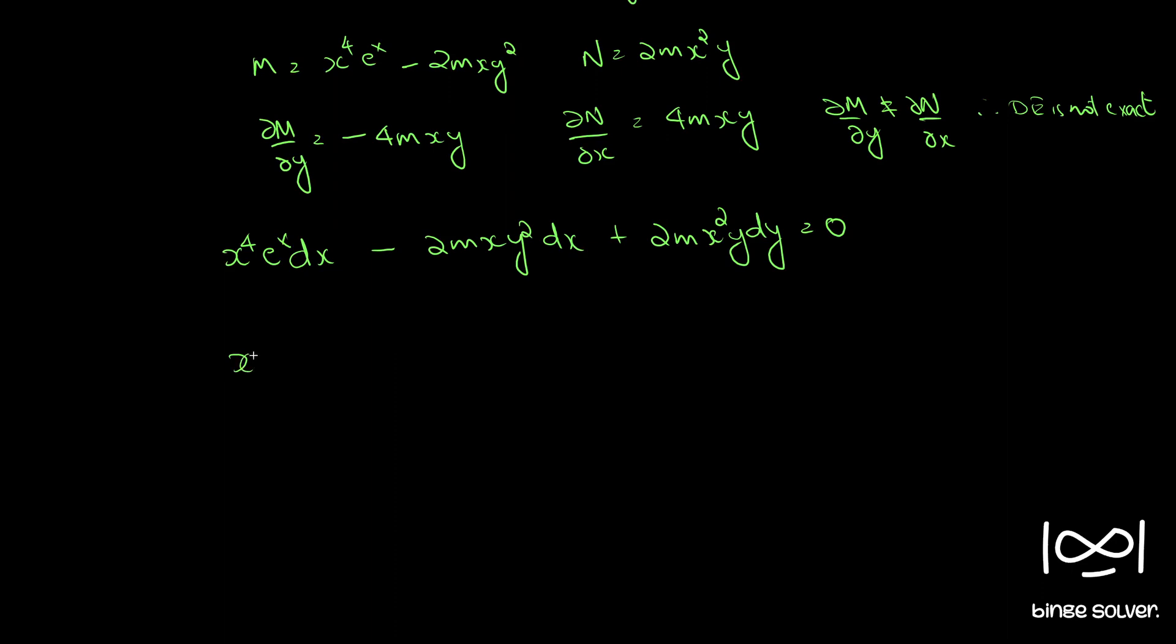Now we have x raised to 4 e raised to x. We will take 2m xy common, we will have y dx minus x dy. We took minus so minus equal to 0.